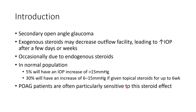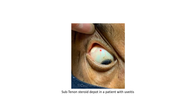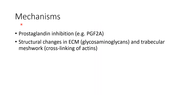Topical ocular steroids are usually given for cases like perennial allergic conjunctivitis. Primary open-angle glaucoma patients are often particularly sensitive to this steroid effect. This picture shows a case of sub-Tenon's steroid depot in a patient with uveitis leading to steroid-induced glaucoma.